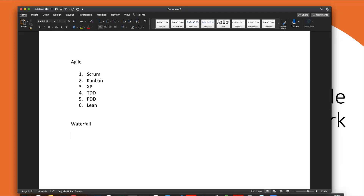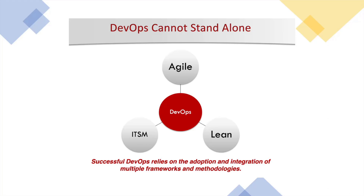Apart from Agile and Waterfall, there is also the ITSM framework — IT Service Management — and the SAFe framework, which is the Scaled Agile Framework, among many others. As mentioned, DevOps cannot stand alone. DevOps has to have some process, framework, or methodology along with it. DevOps goes very well with Agile, Lean, and ITSM. The combination of all three gives the power of DevOps, making adaptation and integration of multiple frameworks and methodologies much easier.